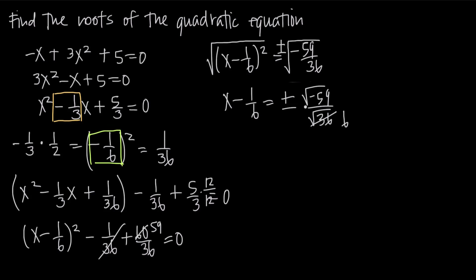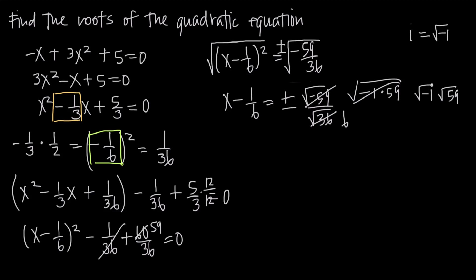The square root of negative 59 is the same thing as the square root of negative 1 times 59 — we haven't changed the value at all because negative 1 times 59 is negative 59. When we have two values multiplied together inside a square root, we can separate them into their own square roots. So the square root of negative 1 times 59 is the square root of negative 1 times the square root of 59. From working with complex and imaginary numbers, the imaginary number i equals the square root of negative 1, so we replace that value with i.